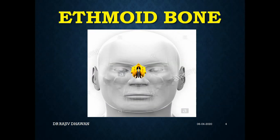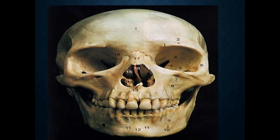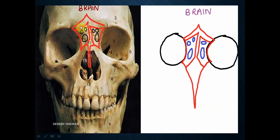The ethmoid bone is a single bone in the body - it is between the two orbits. Can you see the yellow-coloured bone? It is between two orbits. In your skull, the red-highlighted bone is the ethmoid bone, a single bone having two halves, two labyrinths, and these labyrinths have multiple air cells called ethmoid air cells. Between the two orbits is the ethmoid bone, and above that is the brain.